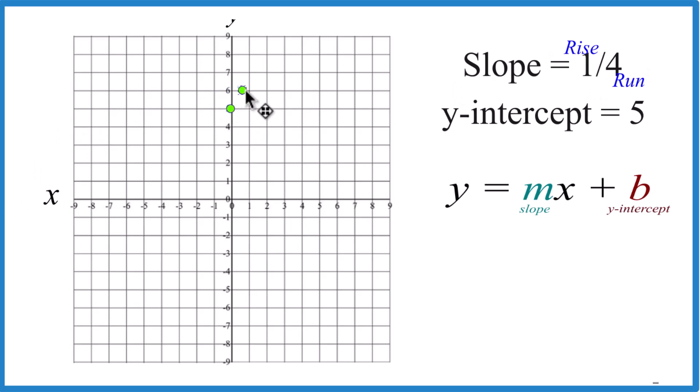So go to our y-intercept, we rise 1, and we go 1, 2, 3, 4. That's our second point.